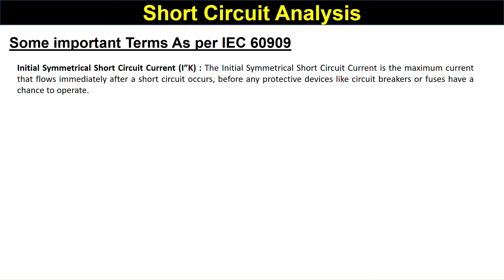There are some important terms as per IEC 60909, the standard used for short circuit analysis. The first term is the Initial Symmetrical Short-Circuit Current. This is the maximum current that flows after a short circuit occurs, before any protective device like a circuit breaker or fuse has a chance to open. The starting value of the short-circuit current before any protective device operates is called the Initial Symmetrical Short-Circuit Current.